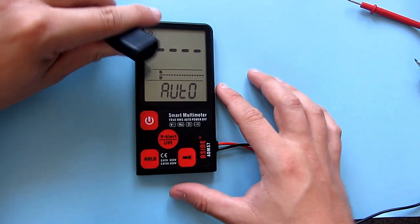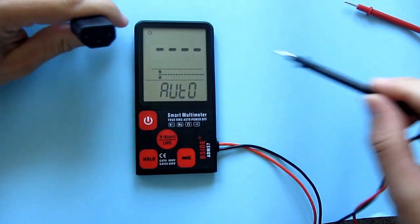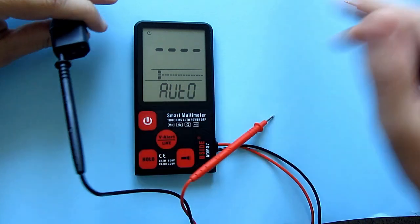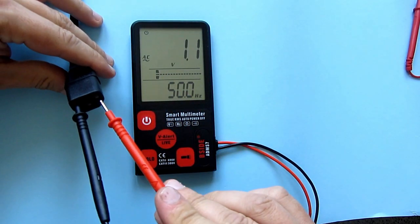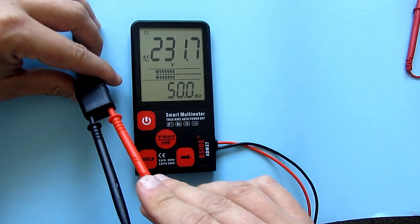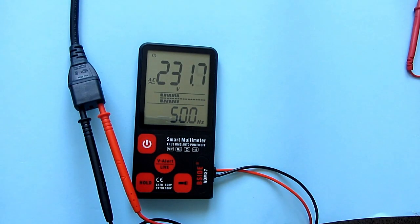It can also measure AC voltage. I will take this PC plug and measure voltage in my house. It says 230 volts and 50 hertz, which is normal for my location.